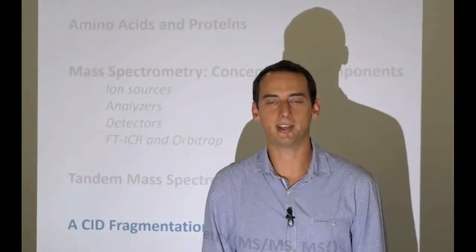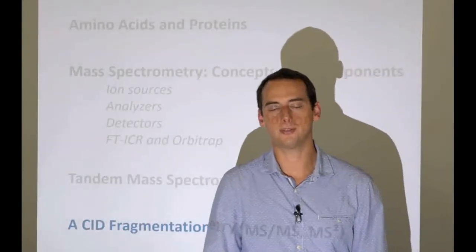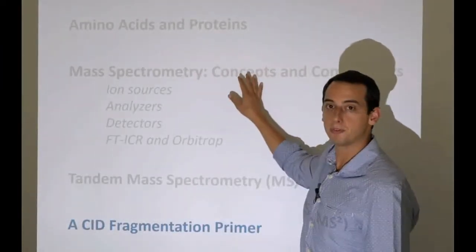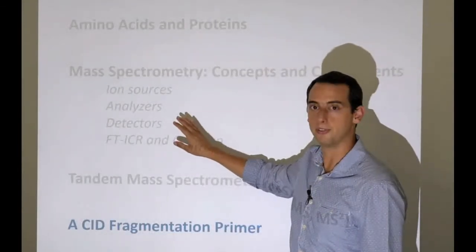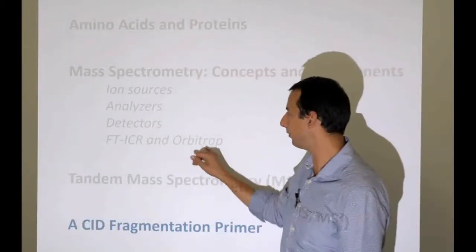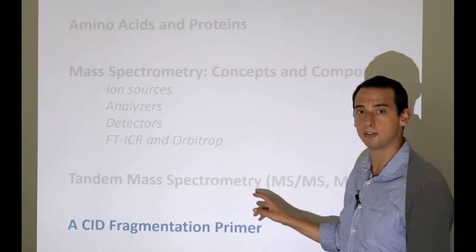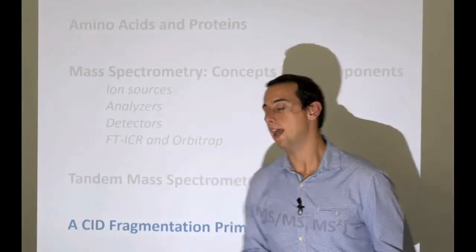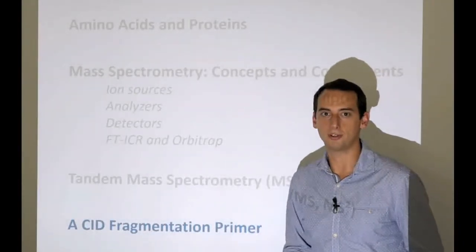Hello, Bernhard Mertes from Kent University at VIB. We're now looking at the seventh installment and the final installment of our series on mass spectrometry basics. We've covered amino acids and proteins, basic concepts and ion sources, mass analyzers, detectors, Fourier transform ion cyclotron resonance and orbitrap instruments, and tandem mass spectrometry. Now we're going to have a closer look at fragmentation. So without further ado, let's have a look.